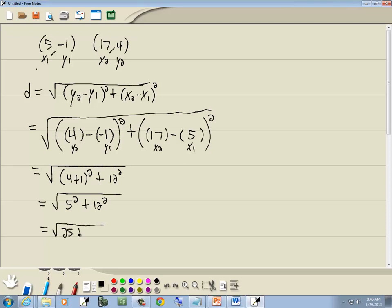5 squared is 25. 12 squared is 144, which gives us the square root of 169, and 169 is 13 times 13.